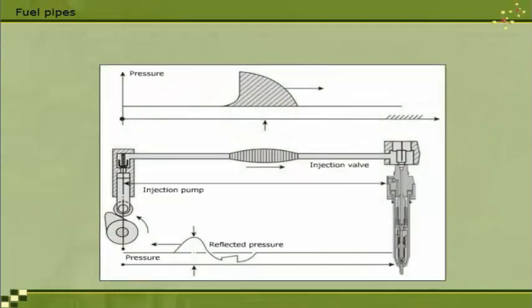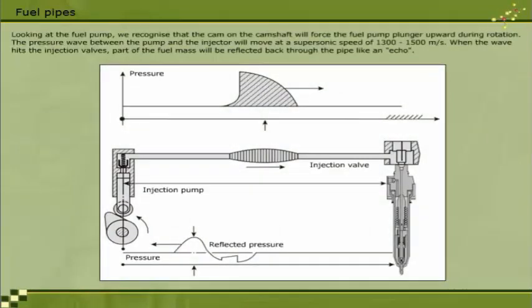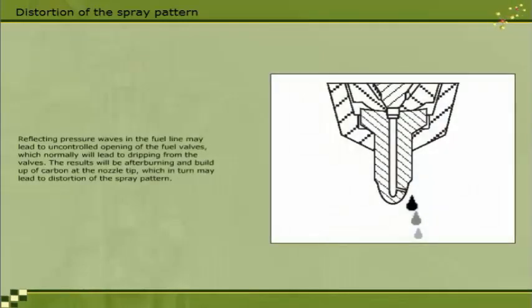Looking at the fuel pump, we recognise that the cam on the camshaft will force the fuel pump plunger upward during rotation. The pressure wave between the pump and the injector will move at a supersonic speed of 1300 to 1500 metres per second. When the wave hits the injection valves, part of the fuel mass will be reflected back through the pipe like an echo. Reflecting pressure waves in the fuel line may lead to uncontrolled opening of the fuel valves, which normally will lead to dripping from the valves.